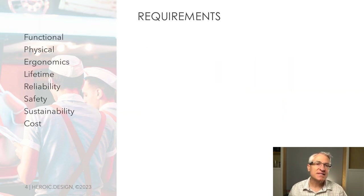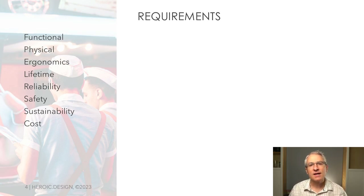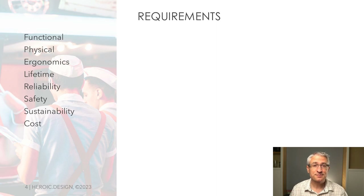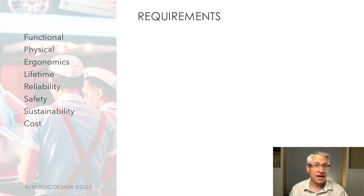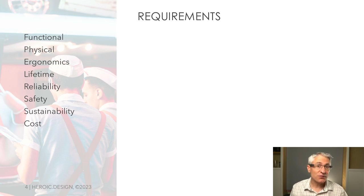Because we set requirements before the functional map, they typically cover the whole design. Some requirements will apply to specific sub-functions, but we don't generally know that yet. A great place to look for requirements is your competitor's website. Look for numbers or other bars your design will need to jump over. If you don't know the actual numbers you're aiming at, just leave them blank for now and update them later. Always state the units for your numbers.